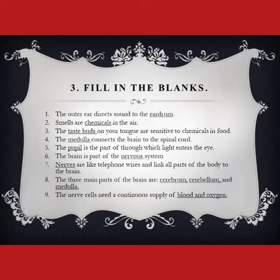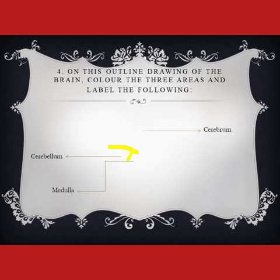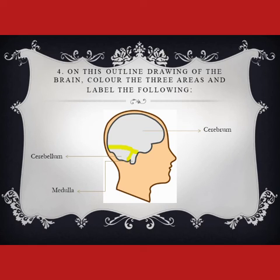Now we move to question number four. One important thing — you have to try this on your own. On the outline drawing of the brain, color the three areas and label the following so that we can identify them easily. It's quite simple, so you can do it. If you have any query, you can ask in the group. Thank you very much.